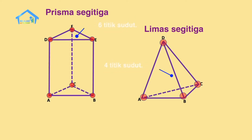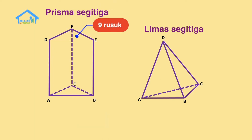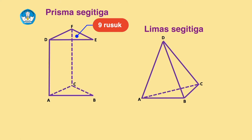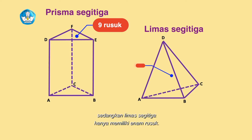Dan yang terakhir, prisma segitiga memiliki sembilan rusuk. Sedangkan limas segitiga hanya memiliki enam rusuk.